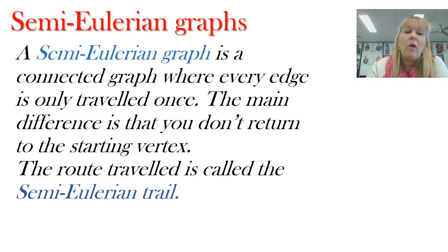Now we've got something called a semi-Eulerian graph and it's just like it sounds. It's almost like an Eulerian graph. It's just a little bit like it but not quite. The main difference between the two is that we don't have to start and finish at the same place. So it's semi-Eulerian. Every edge is being traveled once. Now the route that we travel around that is called the semi-Eulerian trail.